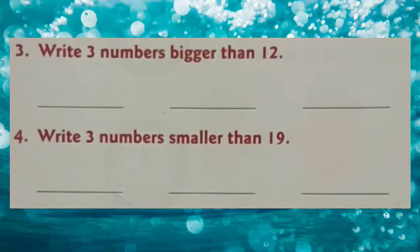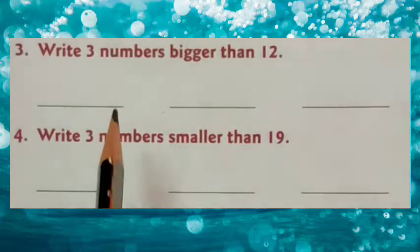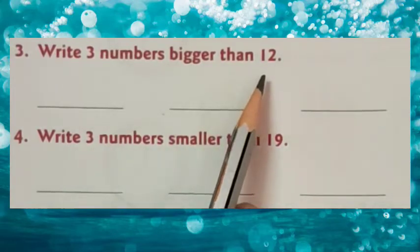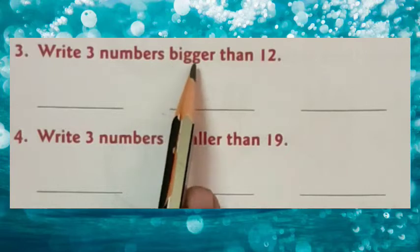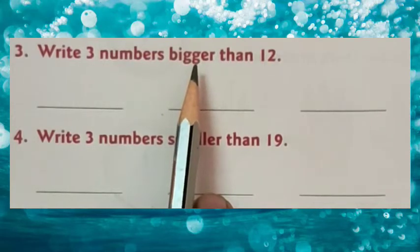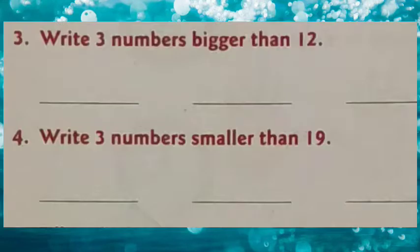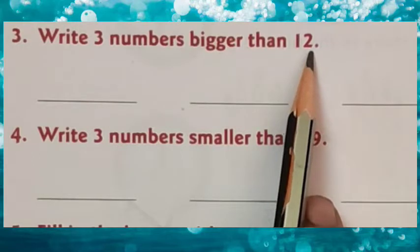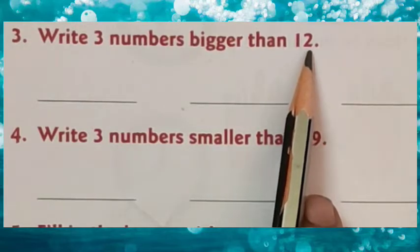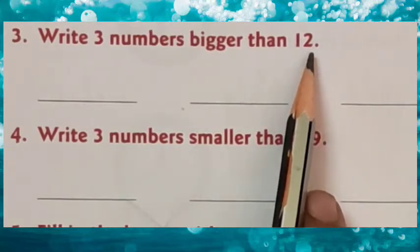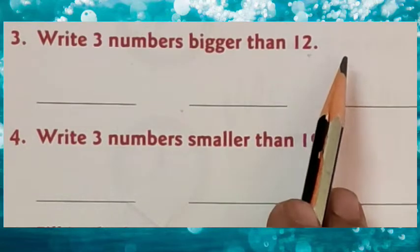Now let us go on to the third question: write three numbers bigger than 12. When do you get bigger numbers? When you write after a given number, you get bigger numbers. Here the number given is 12, so we have to write numbers bigger than 12. That means you have to write after 12 — any number after 12 is bigger than 12.